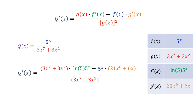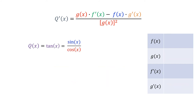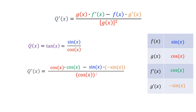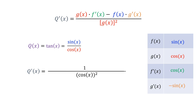Let's look at another example. Here is a new function, tangent of x, which we can write as sine of x divided by cosine of x. So sine of x is our f of x, and cosine of x is our g of x. The derivative of f of x is cosine of x, and the derivative of g of x is negative sine of x. Applying the quotient rule, we can simplify the numerator as cosine squared plus sine squared, which equals 1. And 1 over cosine squared is equal to secant squared.